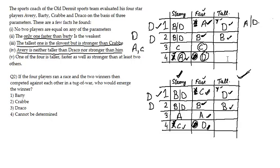The second question: if the four players ran a race and the two winners then competed in a tug of war, who would win? Running a race means the two fastest players proceed — that is C and B in Case 2, and A and B in Case 1. In the tug of war, which tests strength, B ranks higher in strength than both C and A in their respective tables. So Bharti is the winner — the first option.